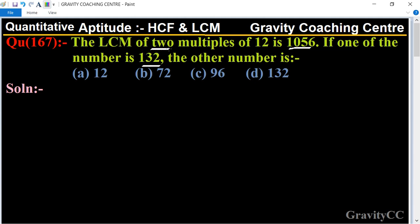The LCM of two numbers is given as 1056, and the two numbers are multiples of 12, which means the HCF is given. HCF equals 12, and LCM equals 1056.